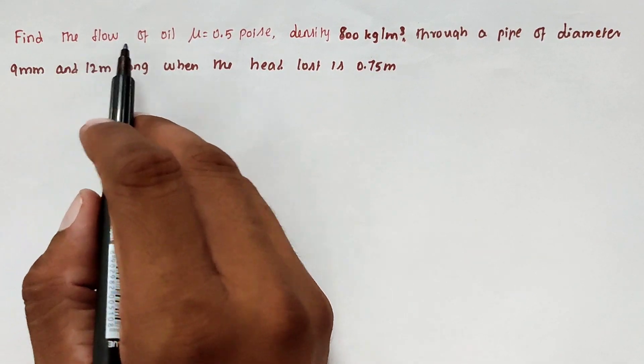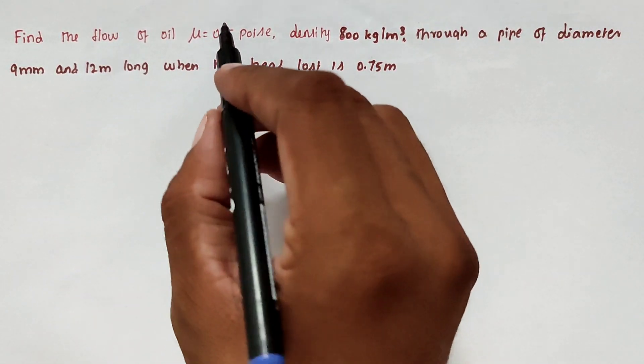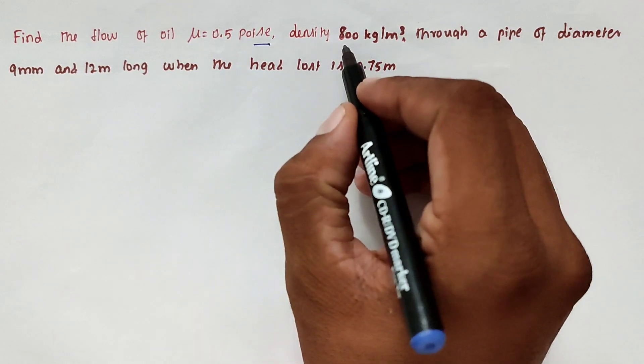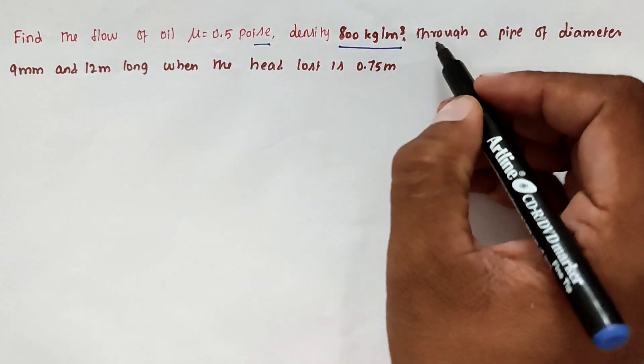The problem is find the flow of oil μ equal to 0.5 poise, density 800 kg per meter cube